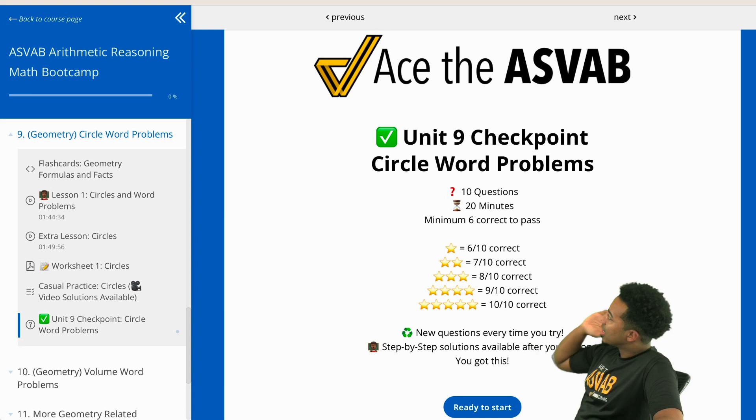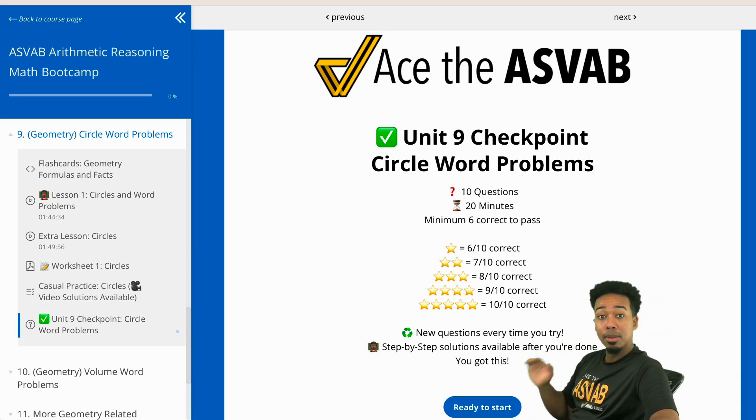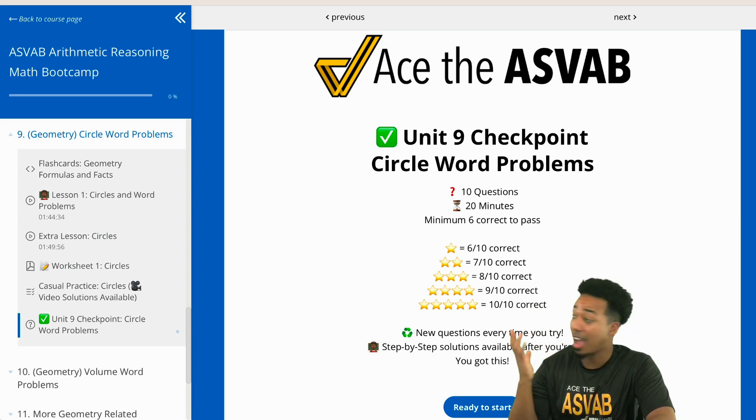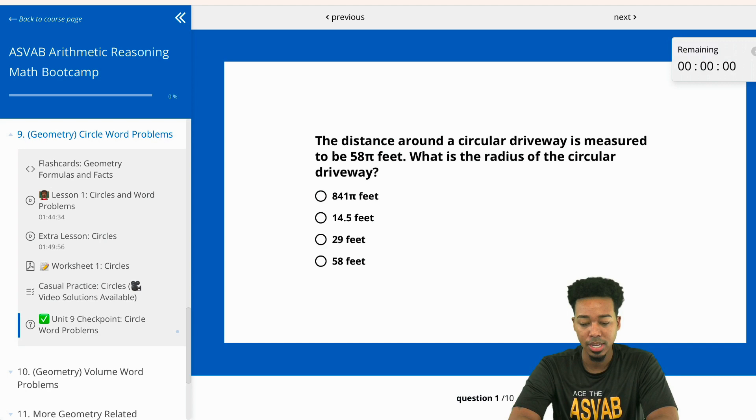So if you take a look behind me, you have 10 questions for this checkpoint. The minimum to pass is six out of 10. That's one star. Get all 10 correct, five stars and five stars means you're good. So what you're going to do is right there, you see that ready to start button. When you're ready to go, you'll click that, you'll go through this and you're going to have fun.